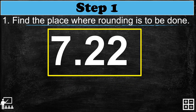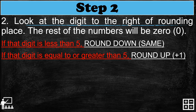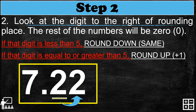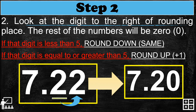Another example: 7.22, or seven and twenty-two hundredths. The digit located at the tenths place value is two. Step two: look at the digit to the right — it is two, and two is less than five. So we round down and just keep the number as two. Our new decimal is 7.2, and the rest will be zero.